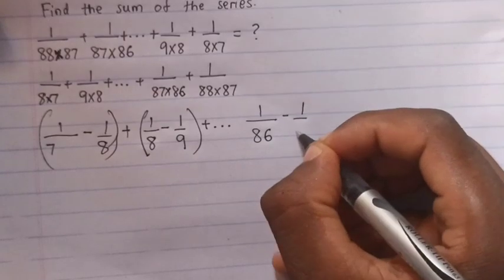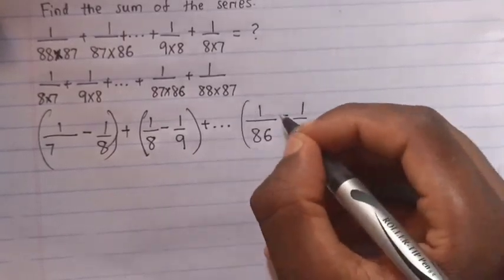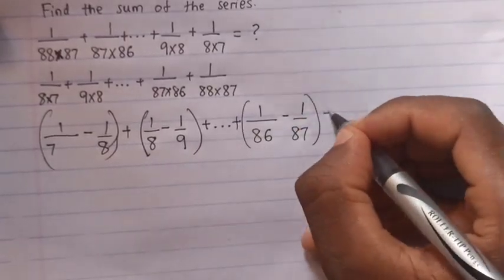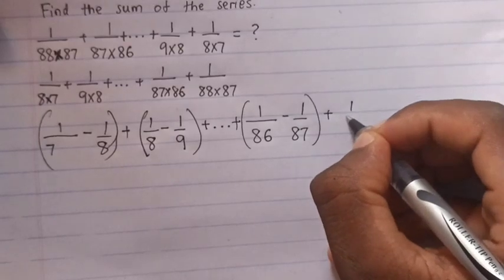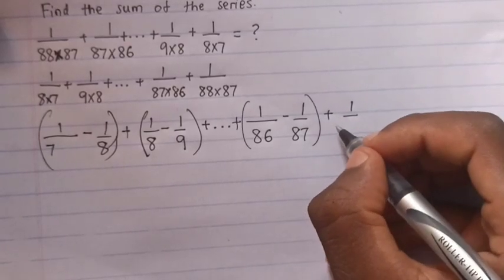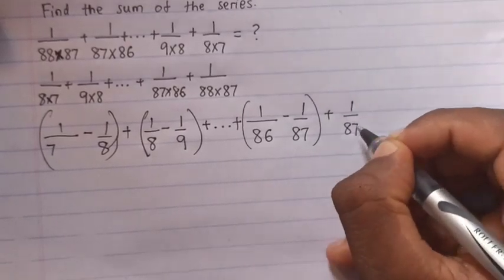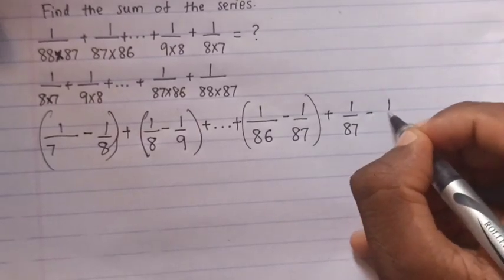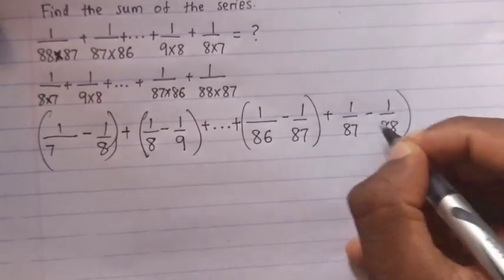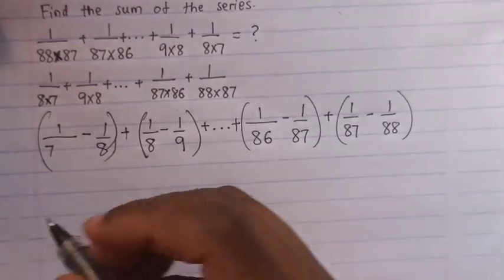Minus 1 over 87, bracket, plus, plus 1 over 87, minus 1 over 88.